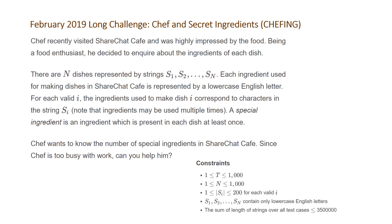For each valid i, the ingredients used to make dish i correspond to characters in the string Si. Note that ingredients may be used multiple times. A special ingredient is an ingredient which is present in each dish at least once. Chef wants to know the number of special ingredients in Chair Chat Cafe. Since Chef is too busy with work, can you help him?